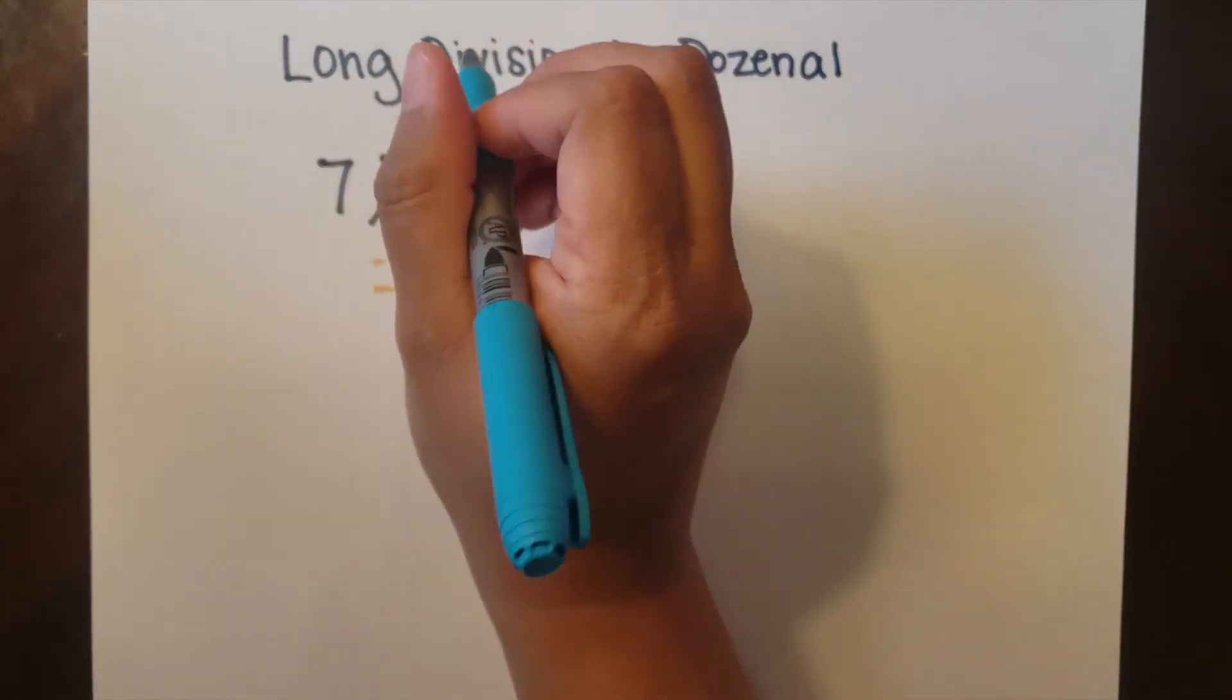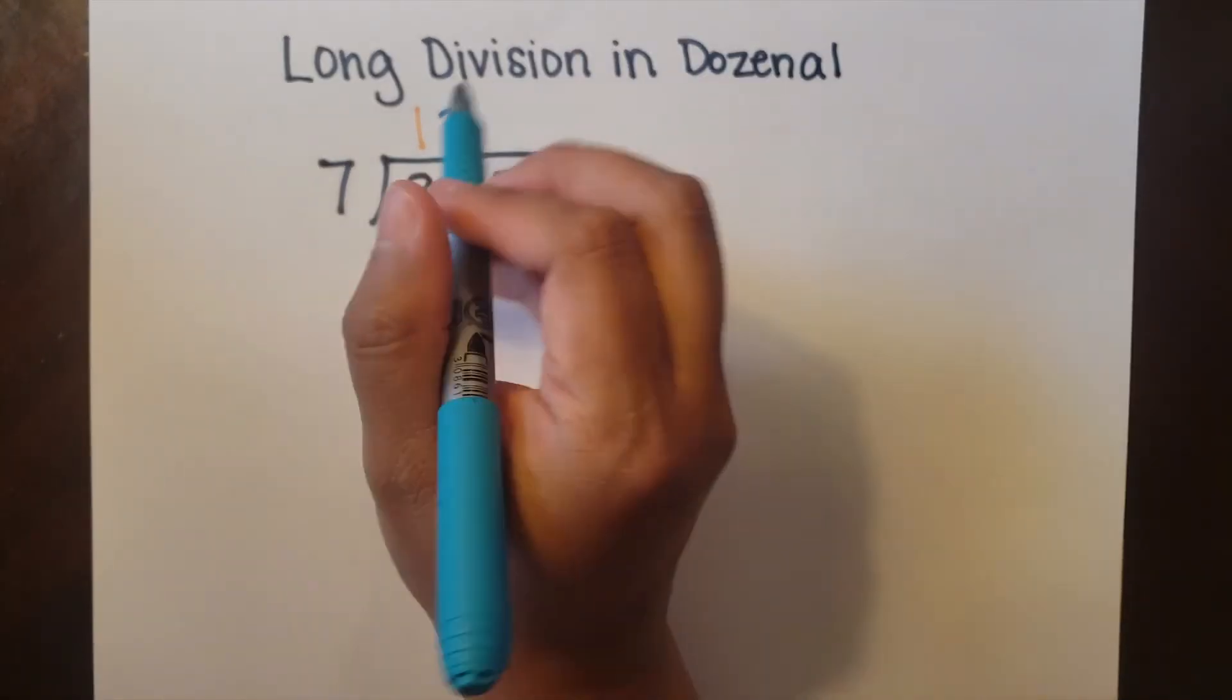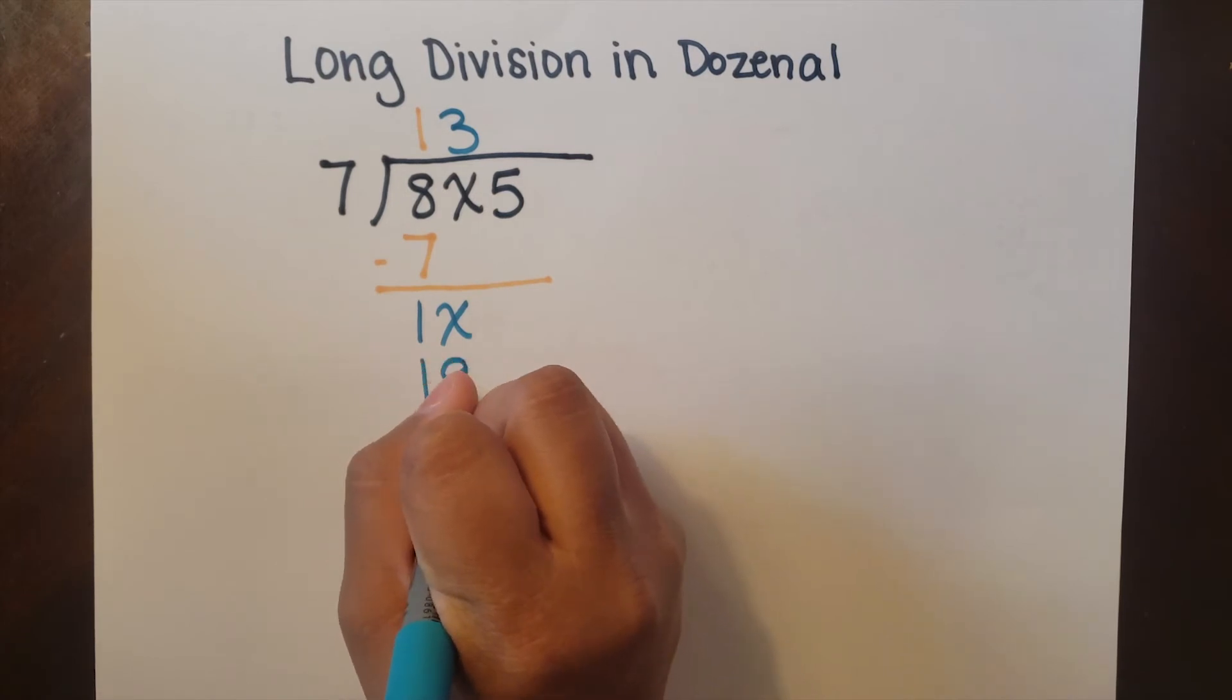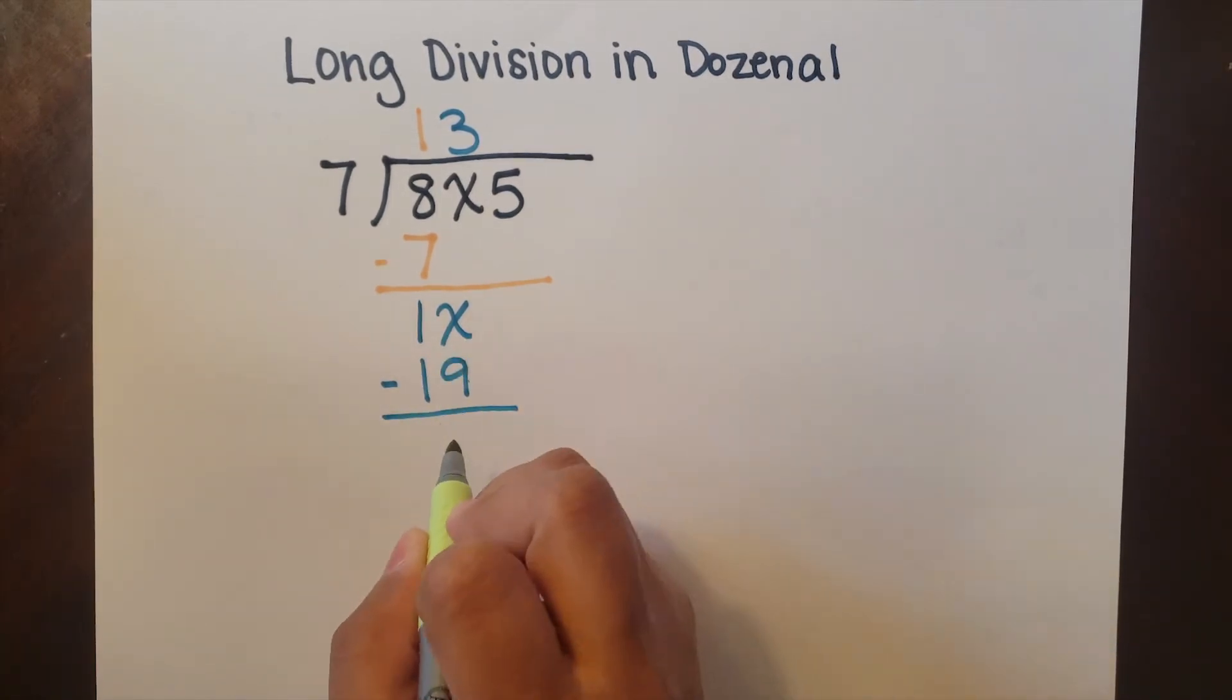Well, seven will fit into one deck three times, which is one doe nine. I subtract the one doe nine, and again I get one and I bring down the five to get one doe five.